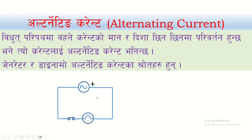If you have a positive terminal, the current flows in one direction. By changing the current from a fraction of a second, the direction changes. The current may go in one direction, but then it will change to the opposite direction. Unlike direct current where only magnitude changes, in alternating current the direction itself reverses.